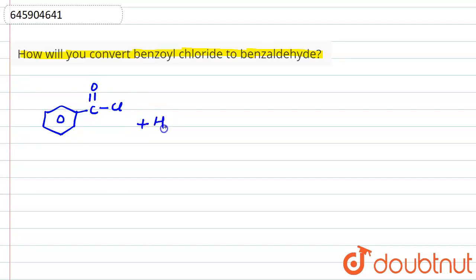Now that will react with H2, means reduction reaction is there. H2, this chlorine will replace by the H2 in the presence of Pd BaSO4, and this reaction is known as Rosenmund reaction.